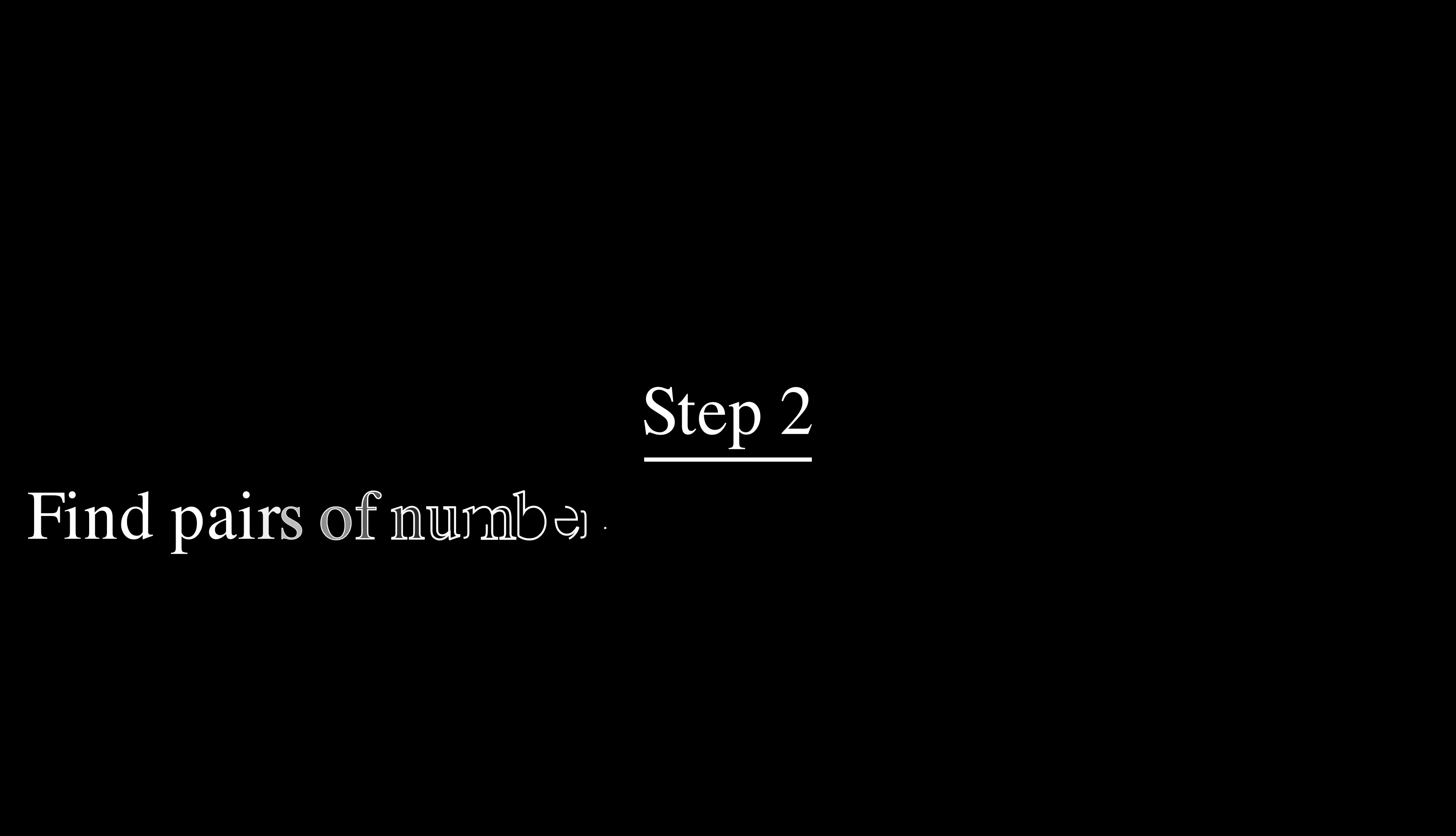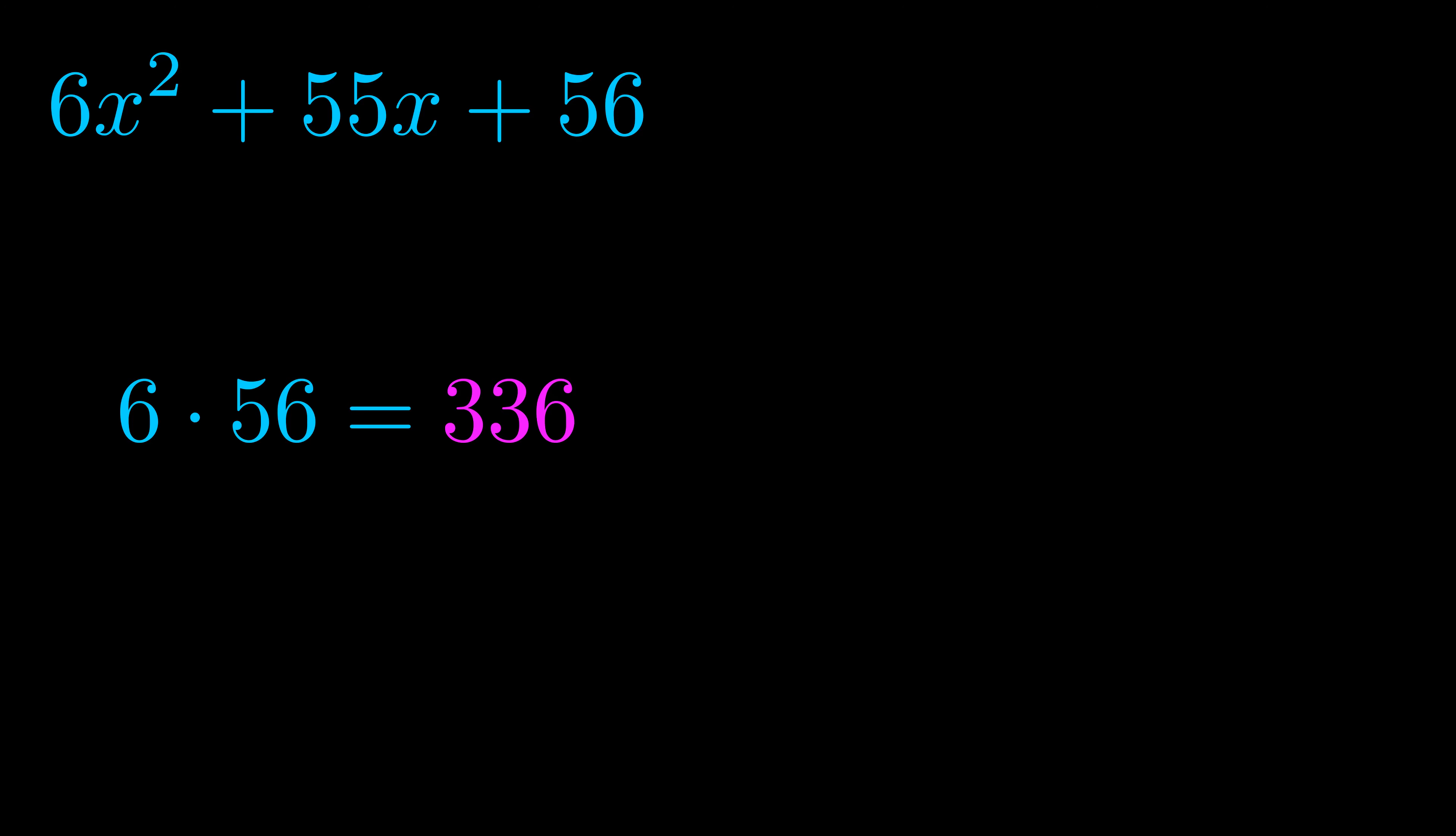Step two is to try to find all of the pairs which multiply to this number. Now it turns out you don't really need to find all of them but go ahead and write down as many numbers as you can that multiply to the magenta value for now. Pause the video and resume when you're ready to continue.